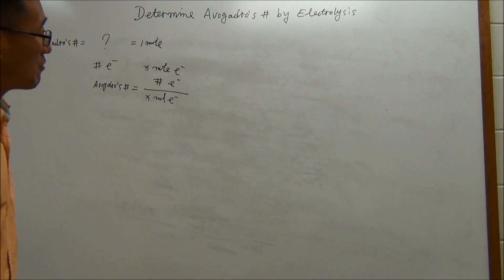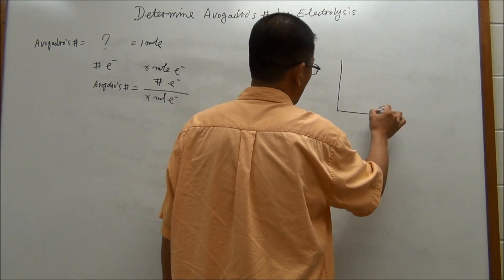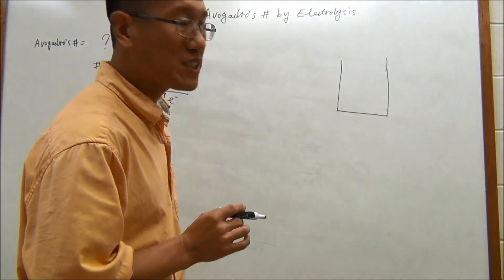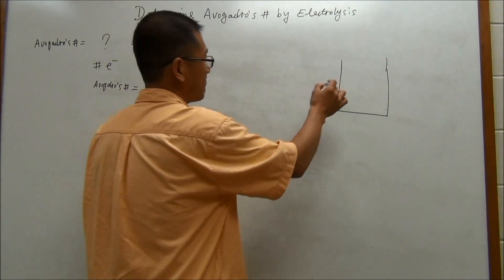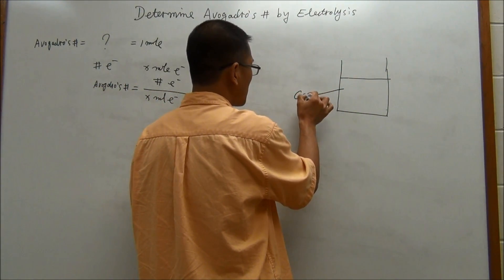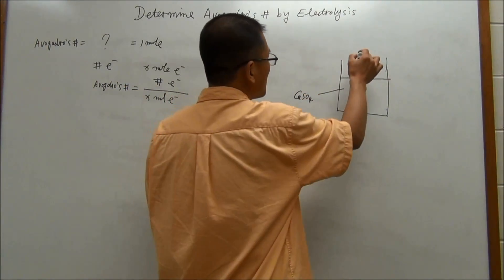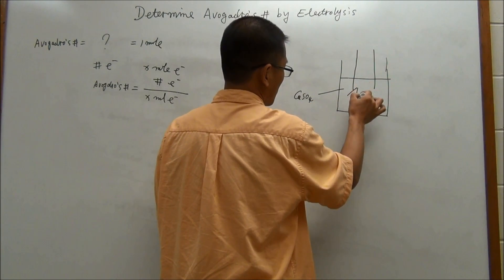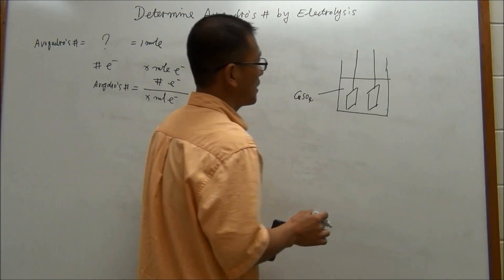Let's look at the experimental setup. For this experiment, you have a beaker, and this beaker contains a solution of copper(II) sulfate. You put copper(II) sulfate into this solution, and then you put in two electrodes. Both of them are copper electrodes.